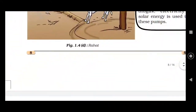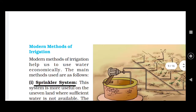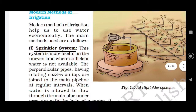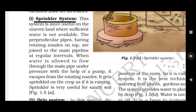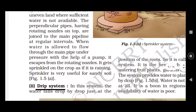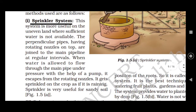Now we have to study the modern irrigation methods, which are of two types: the sprinkler system and the drip system. The sprinkler system is more useful on uneven land where sufficient water is not available.